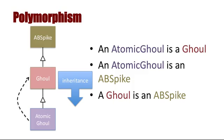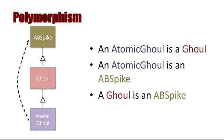In the same way, an atomic ghoul is an AB-spike. This was the superclass from which the ghoul class was derived. Because ghouls inherited all the fields and behaviors of an AB-spike object, those same fields and behaviors are passed down to the atomic ghoul class. And finally, a ghoul is an AB-spike.